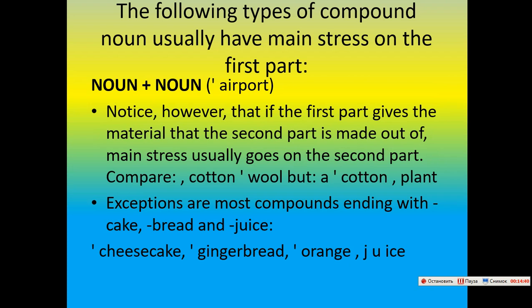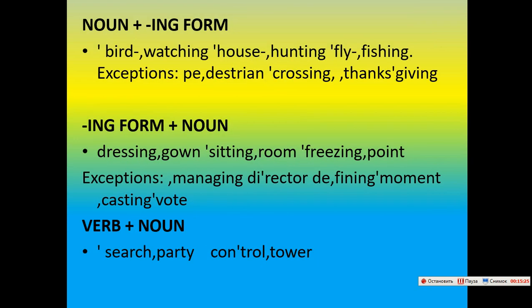The following types of compound nouns usually have main stress on the first part. Noun plus noun — for example: airport. Notice, however, that if the first part is the material that the second part is made out of, main stress usually goes on the second part, e.g. cotton plant. Exceptions are most compounds ending with -cake, -bread, and -juice: cheesecake, gingerbread, orange juice. Noun plus noun (gerund form): bird watching, house hunting, fly fishing. Exceptions: pedestrian crossing, Thanksgiving.